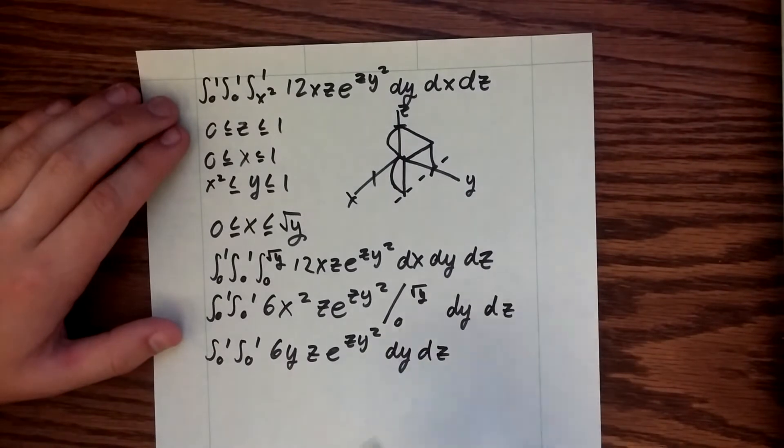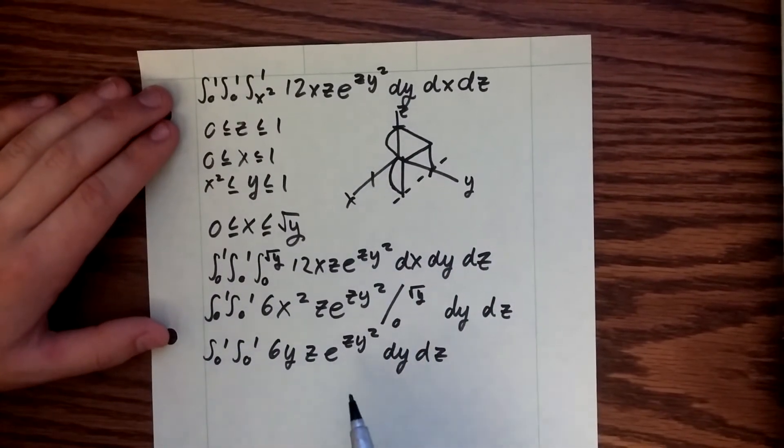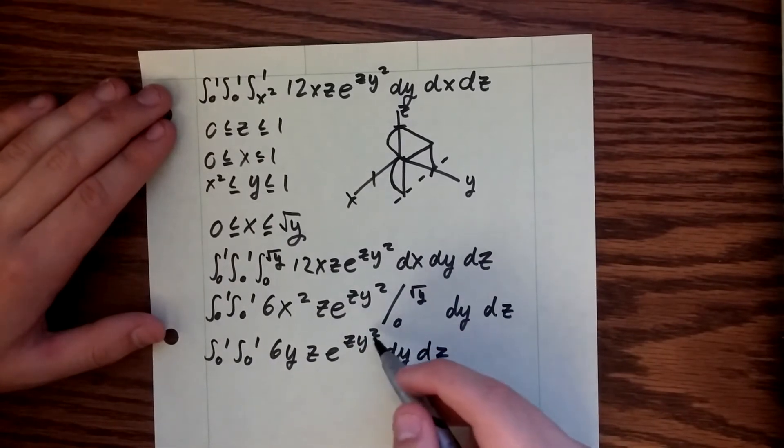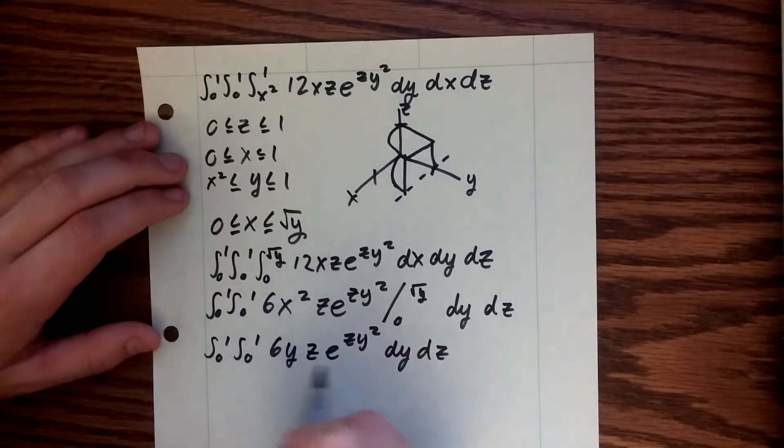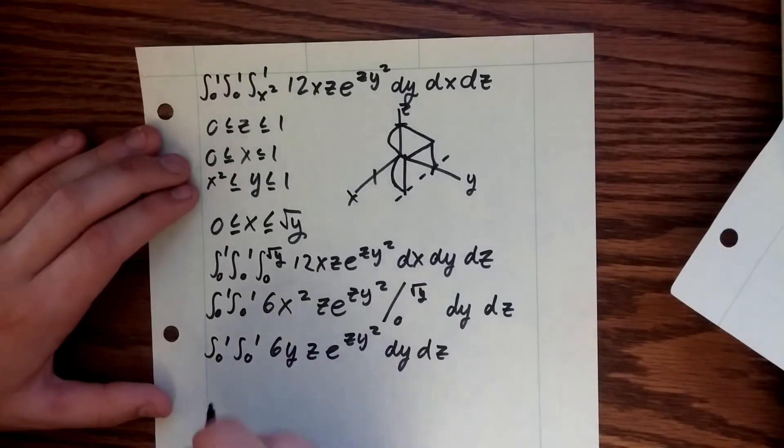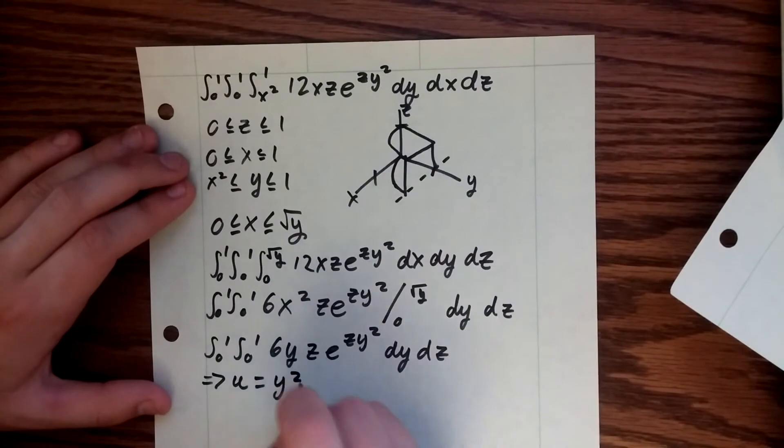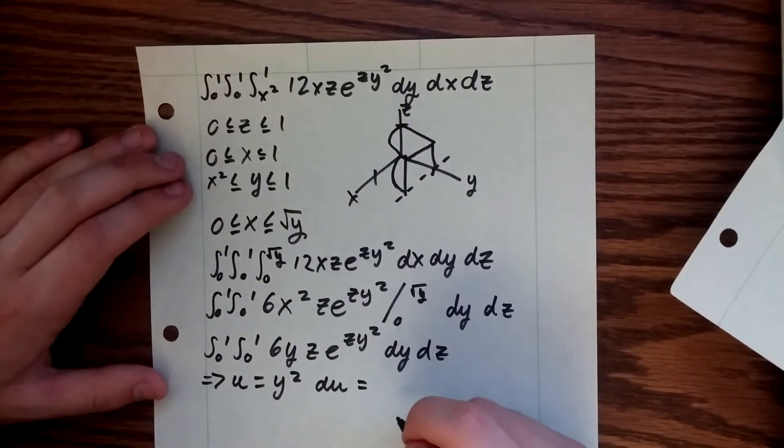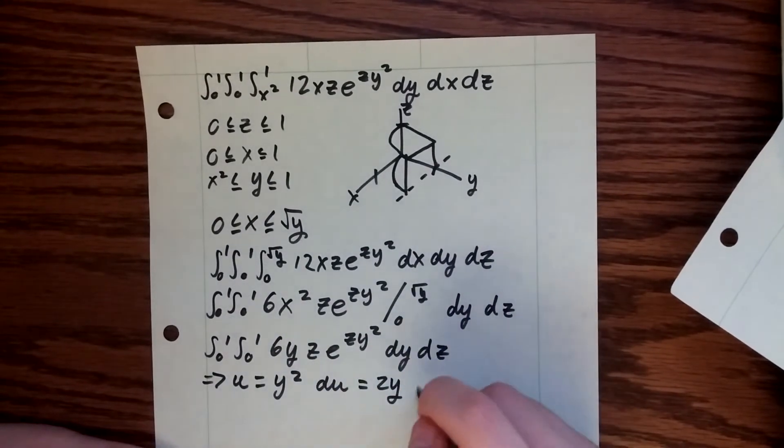And you may have already noticed that we can now turn this problem into a u-substitution problem, since we have our u as y squared and then we can set our du equal to 2y and have it come in in this part of the equation. So u equals y squared and du equals 2y dy.